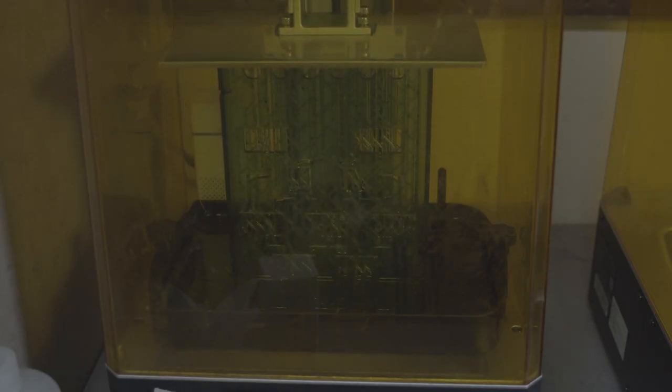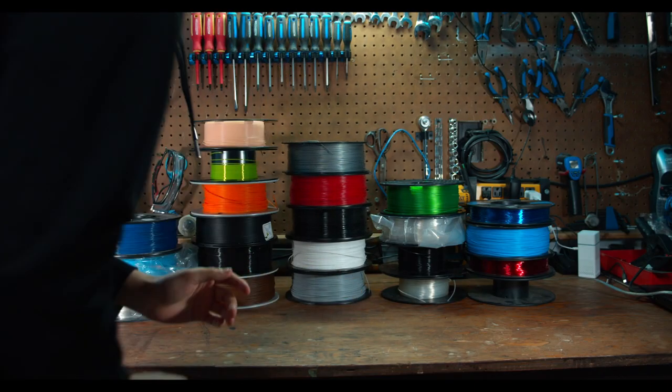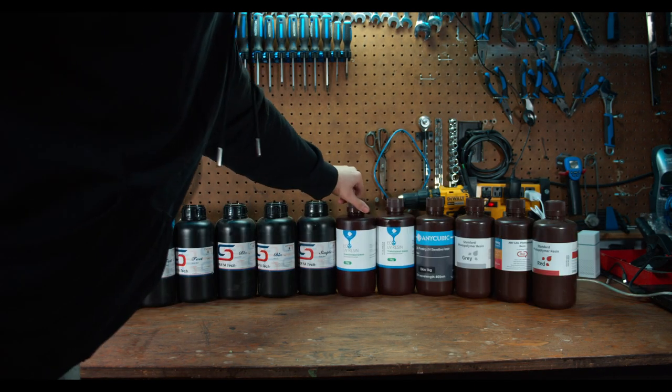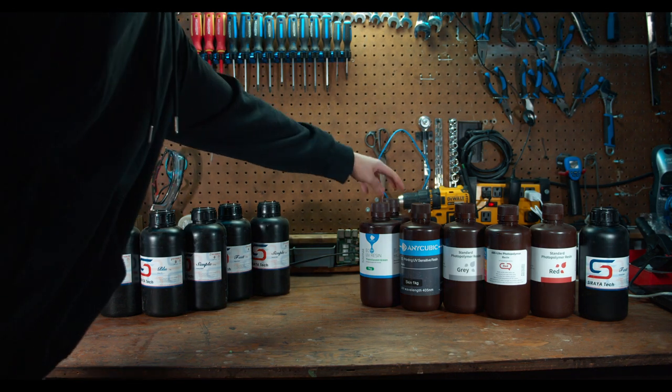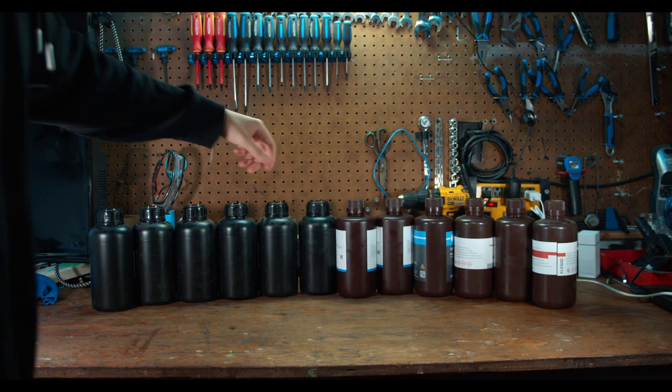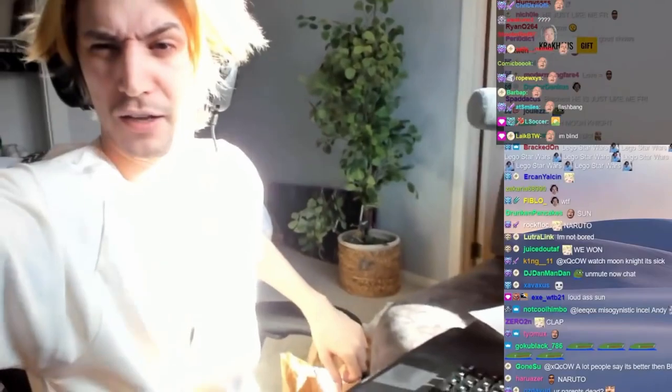Resin printers also print something from nothing. But instead of using rolls of plastic, they use liquid chemicals. You can use non-toxic resins, but there are also some that can be really dangerous. If you didn't notice, all these chemicals are inside blacked out bottles. And that's because they're all sensitive to UV light, which can come from a lot of places, like the sun.